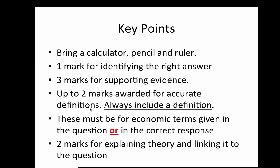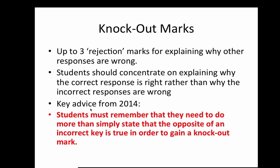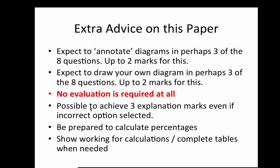There is one mark for identifying the correct answer, and most students actually get the answers right, which is reassuring. There are up to three marks for supporting evidence. You get up to two marks for a full accurate definition — always give a correct key definition if the term is in the question or the correct response. That only leaves two marks, and for those you can explain the theory, link it to the question, apply the theory with an example, or use diagrams and annotation.